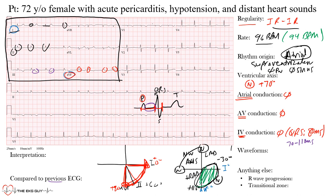The QTc was 398 milliseconds — for a female patient, this is within normal limits. We always want to note the QTc because it can determine which anti-emetics or antibiotics are appropriate to use with our patients — clinically very important.